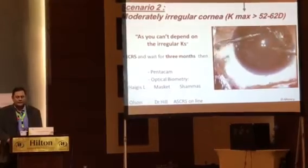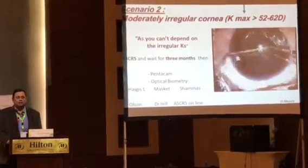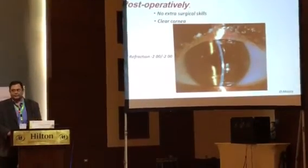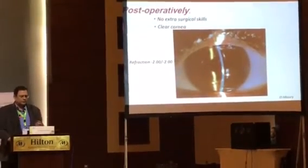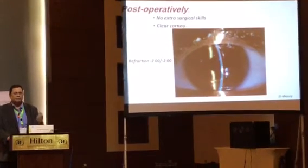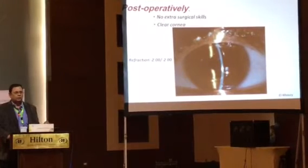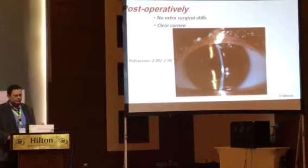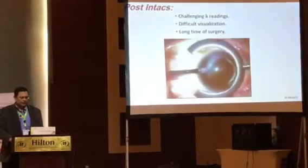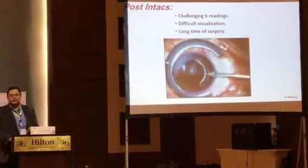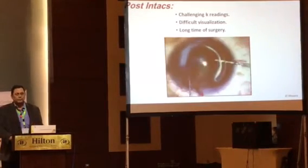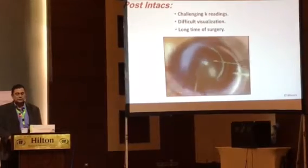There is no problem with the intracorneal ring segments during surgery. After one day, the cornea is clear and no extra surgical skills are required. As we have heard, always aim for myopia in keratoconic patients. This patient has minus two with minus two astigmatism after surgery. But it is not always like this — sometimes after intracorneal segments the cornea may be very difficult to visualize behind.